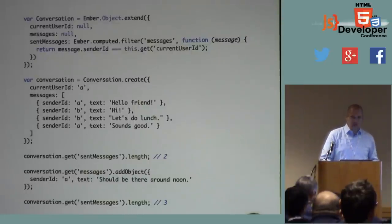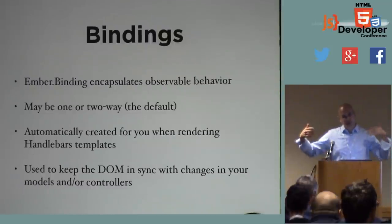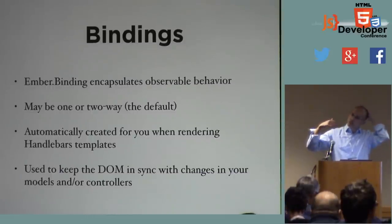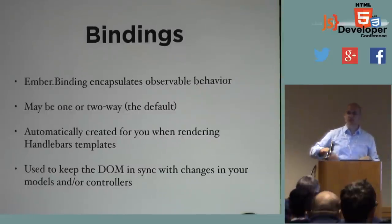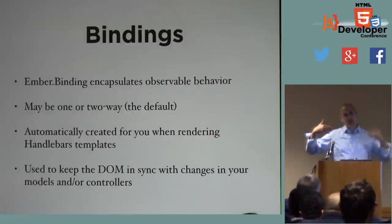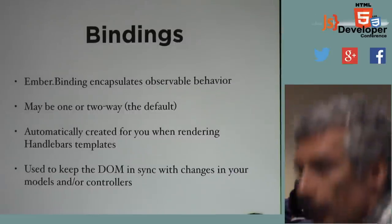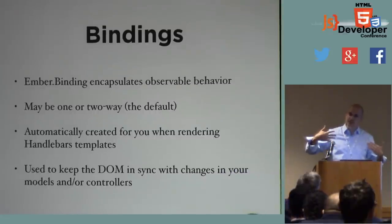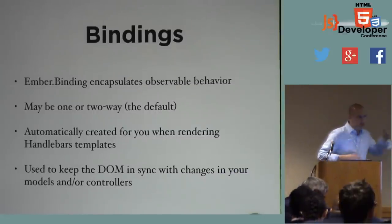This is the stuff that powers bindings. For example, imagine displaying this conversation on a page — building Twitter with an array of tweets, showing how many times a tweet was liked. You need a way to get that like count into the page, to display these computed properties in the DOM. That's where bindings come in. An Ember binding object encapsulates observable behavior. It can be one-way or two-way.